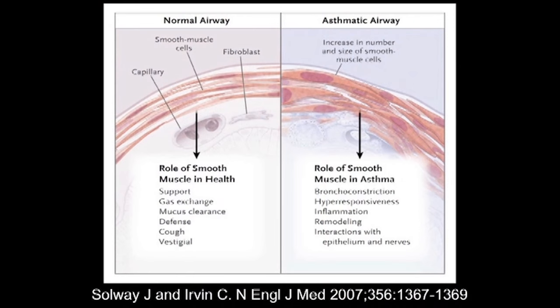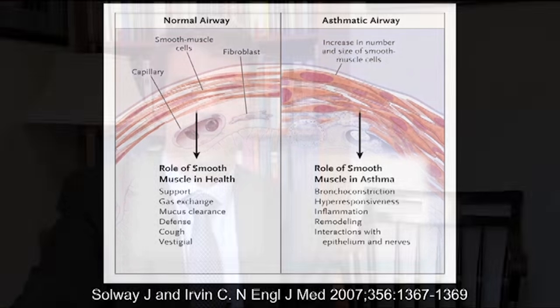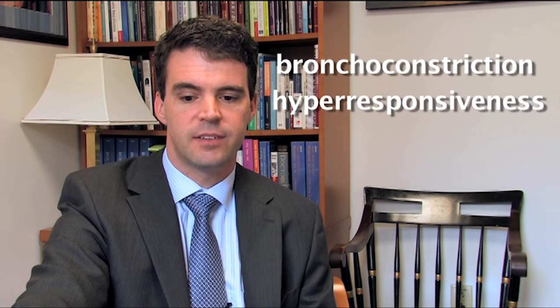Let me take you through the normal airway and the asthmatic airway. On the left side, you see an image of the normal airway with smooth muscle cells, fibroblasts, and capillaries. The role of the smooth muscles in healthy patients is to provide support of the airway, facilitate gas exchange, and help with mucus clearance. On the right side, you see the airway of a patient with asthma — the number and size of smooth muscle cells are increased. In asthma, the smooth muscle cells mediate much of the pathology: bronchoconstriction, hyperresponsiveness, and inflammation.